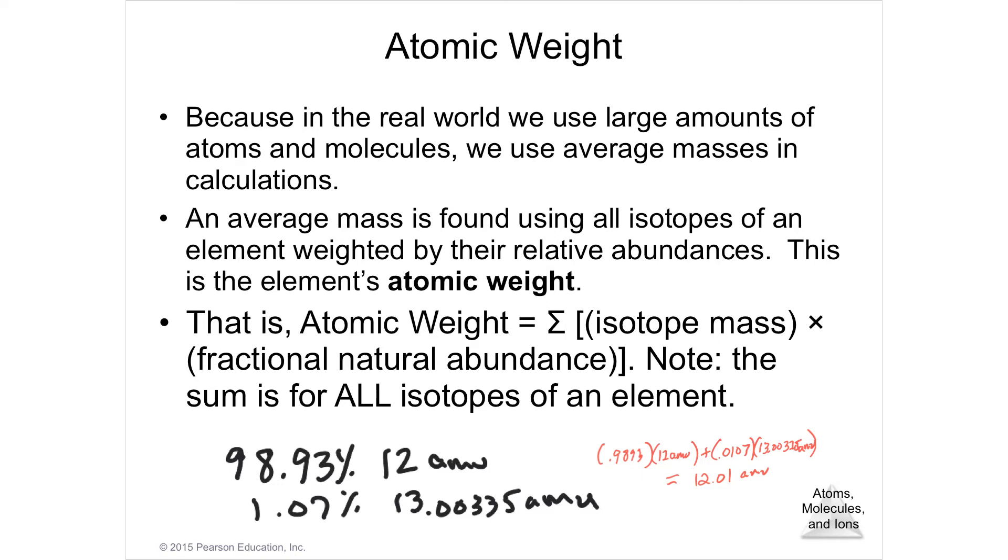So for instance, for carbon, I've written down carbon here as 12 amus. 98.93% of all the carbon that you can dig up in the earth is going to be 12 amus. That means six protons, six neutrons. That particular isotope of carbon is the most abundant.